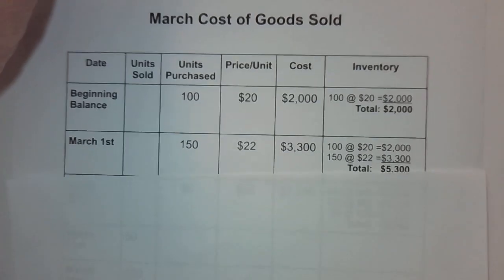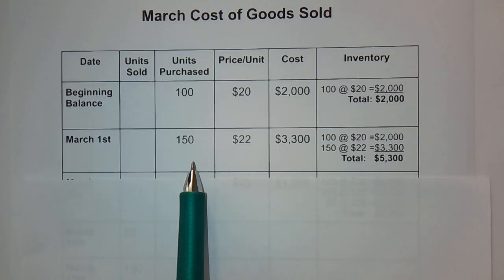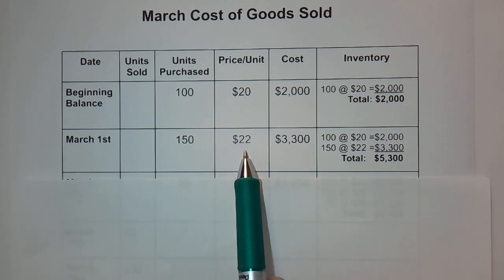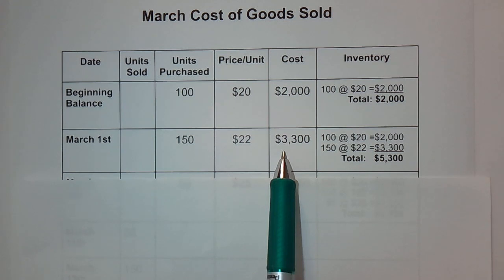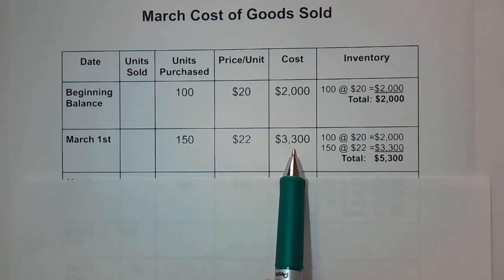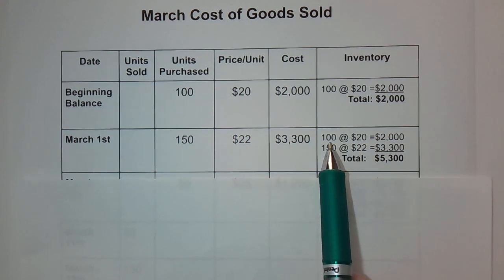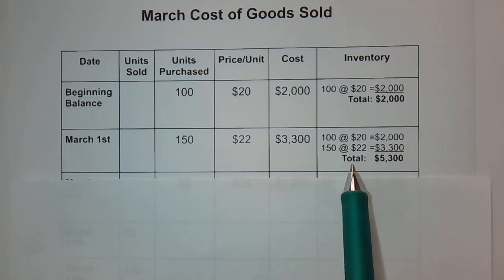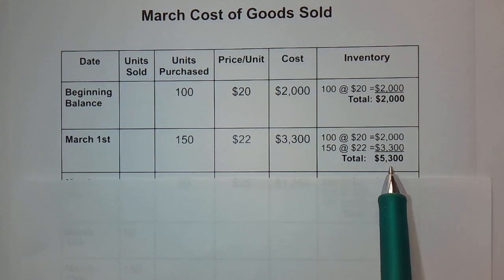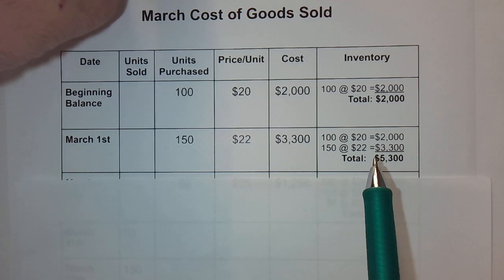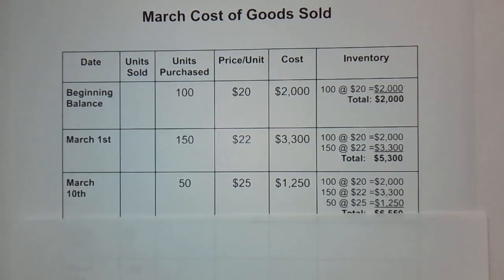Our first purchase: on March 1st, 150 units are purchased for resale. Prices have gone up a little — we're now paying $22 per unit. So 150 units at $22 each equals $3,300. We add that to our prior 100 units at $20 per unit, giving us a total inventory cost of $5,300 as of March 1st. No sales have occurred yet.